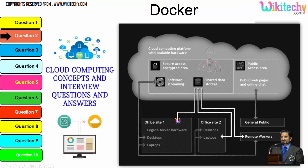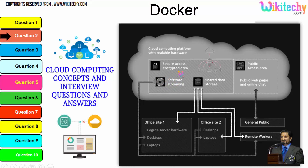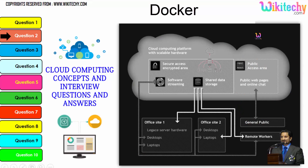Cloud computing has a public access area with public web pages for end users. There is also secure data access, shared data storage, and software streaming. Companies can use it as a private kind of service, and the public can also use it to access web pages or websites — that's how cloud computing works.